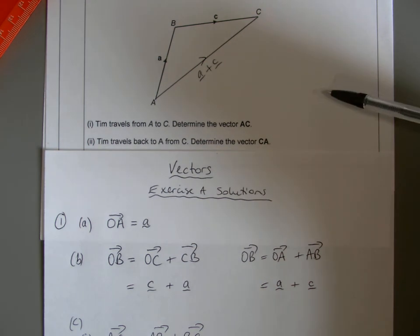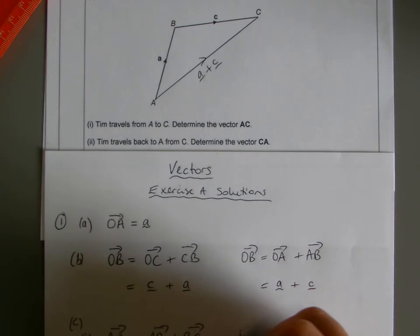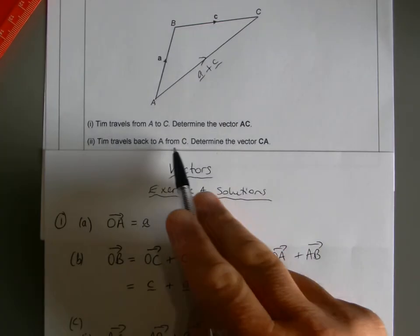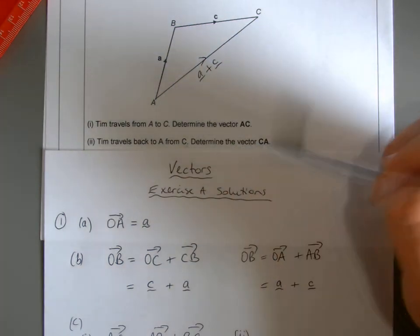And then Tim travels back from C to A. So he goes backwards now. Determine the vector CA.